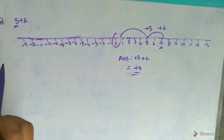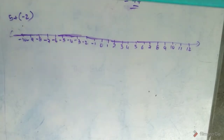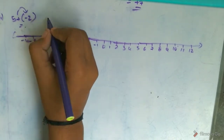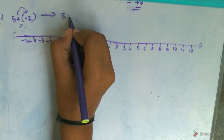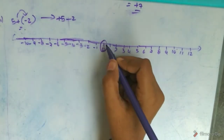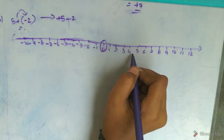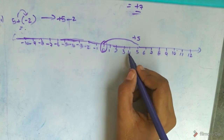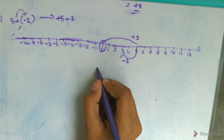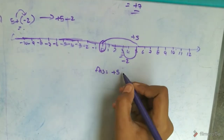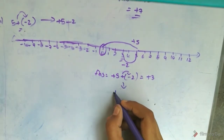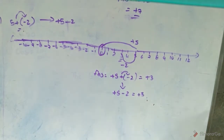Let's do the third one. We have the third Roman: plus 5 plus of minus 2. First simplify this — plus of minus is equal to minus. So it becomes plus 5 minus 2. Start from 0, move plus 5, then minus 2. The answer is: plus 5 minus 2 is equal to plus 3.